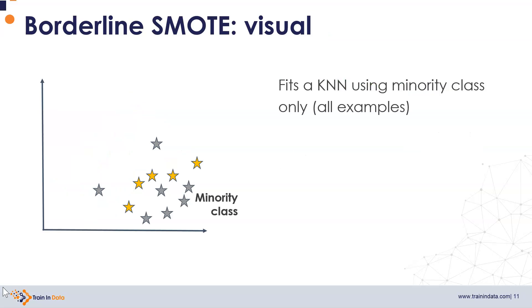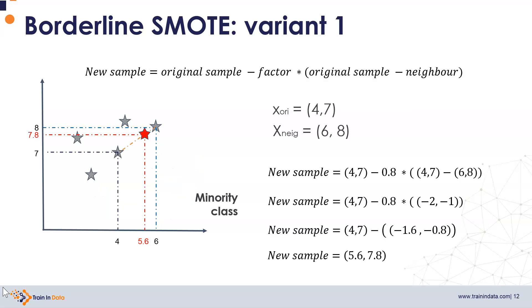With the danger group identified, Borderline SMOTE trains another KNN algorithm using only the samples from the minority class, to find the neighbors of the danger group. In variant 1, synthetic examples are created just as in standard SMOTE: the new example is given by the original sample — one of the orange danger group samples — minus a factor between 0 and 1, times the danger zone sample minus its neighbor, which belongs to the minority class.